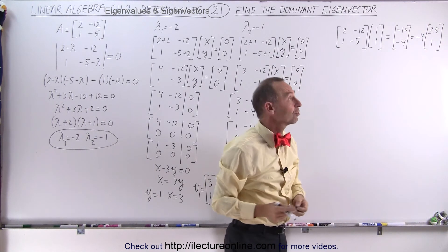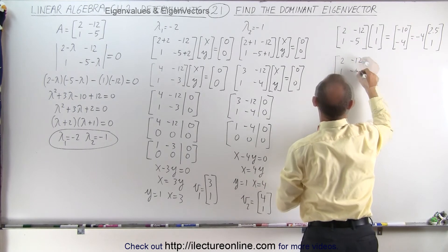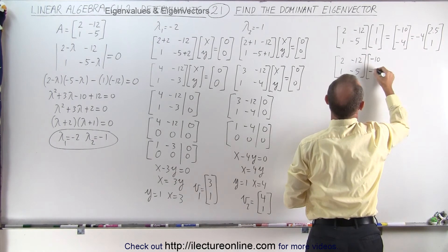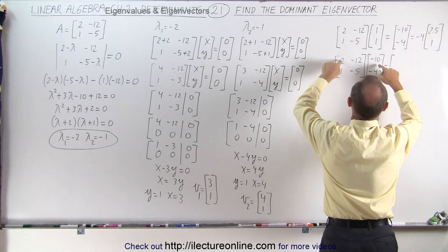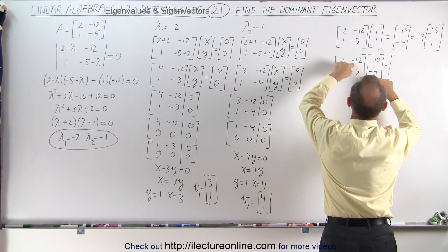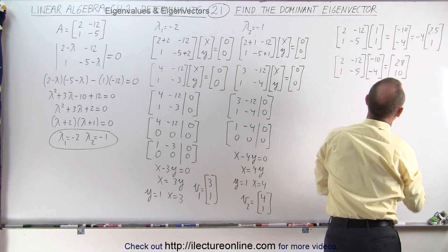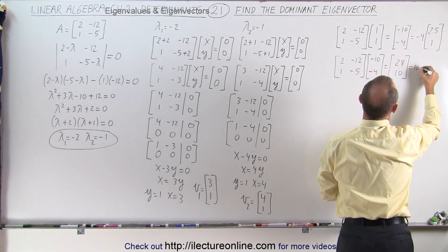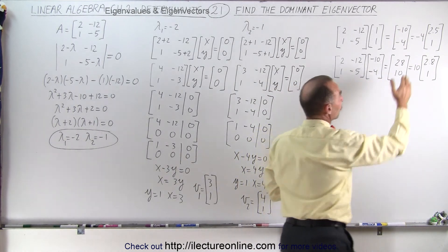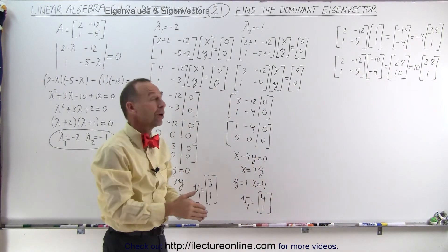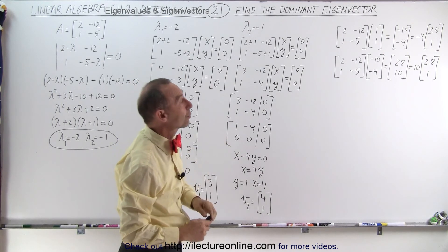Next, we multiply matrix A times the result [minus 10, minus 4]. That gives (minus 20 plus 48) equals 28, and (minus 10 plus 20) equals 10. Factoring out 10, this equals 10 times [2.8, 1]. The eigenvector appears to be converging toward [3, 1]. Even without prior knowledge, this pattern suggests the eigenvector is likely [3, 1], so let's try multiplying A by [3, 1].